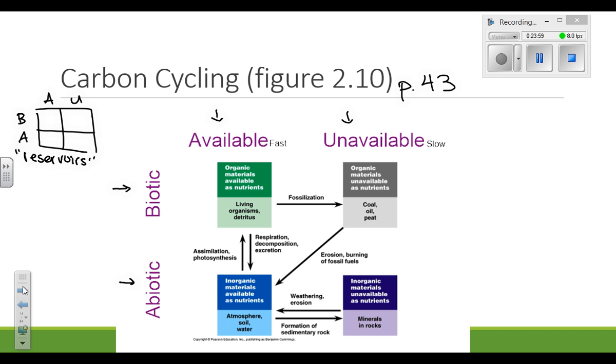And we're classifying them two different ways. On the top we're classifying them as available or unavailable. And then next to that I wrote the word fast and slow. Your textbook likes to call the available side rapid cycling or fast cycling of carbon and the unavailable side slow.